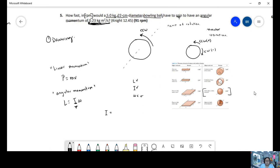So momentum equals two-fifths mass times radius squared. The diameter is 22 times 10 to the minus two meters, so the radius is 11 times 10 to the minus two meters.